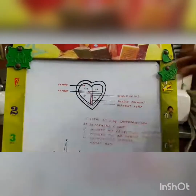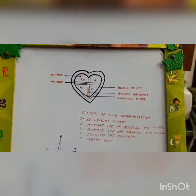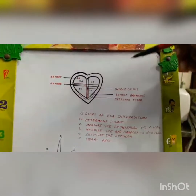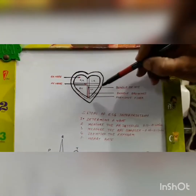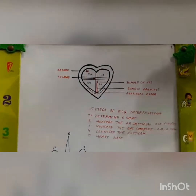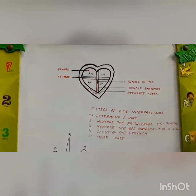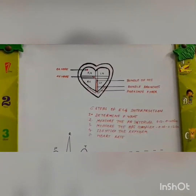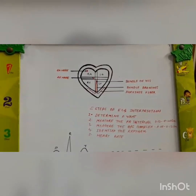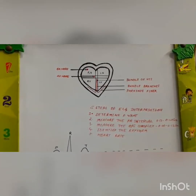For making you understand, I have made some diagrams. You guys come close so that the diagrams will be visible. The first diagram is of the heart — this is the basic structure of the heart. In the heart, as you all know, there are four chambers: right atrium, left atrium, right ventricle, and left ventricle.